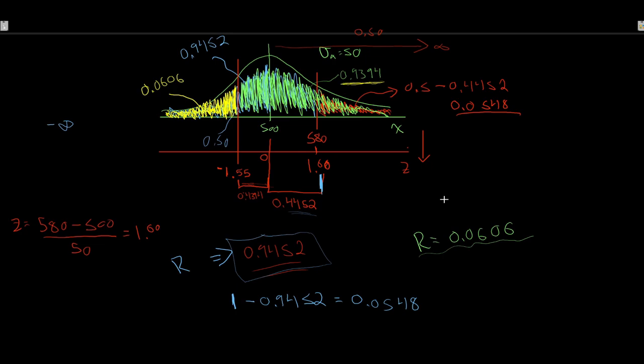The big distinction is that stat software calculates probabilities differently from the table. If we're switching between the two, make sure you keep track of what probability each one is actually reporting.